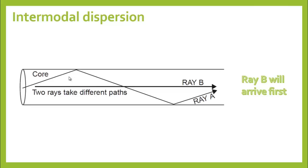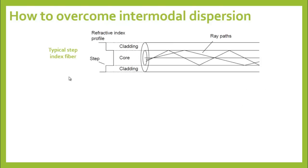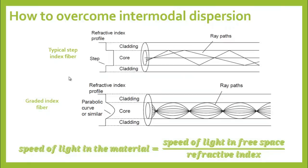One solution to overcome intermodal dispersion is to use what we call graded index optical fibers. The essence of the problem is that the ray that arrives late has taken a longer route. We can compensate for this by making the ray that takes the longer route move faster. If the speed and distance of each route is carefully balanced, then all the rays can be made to arrive at the same time, hence no dispersion.